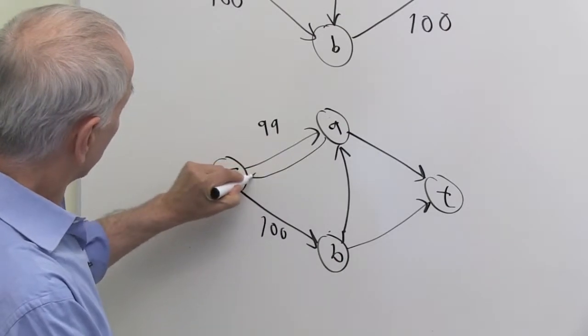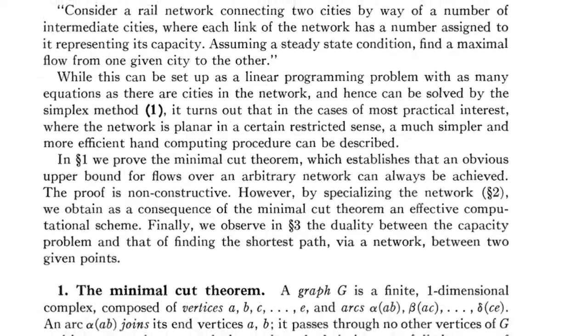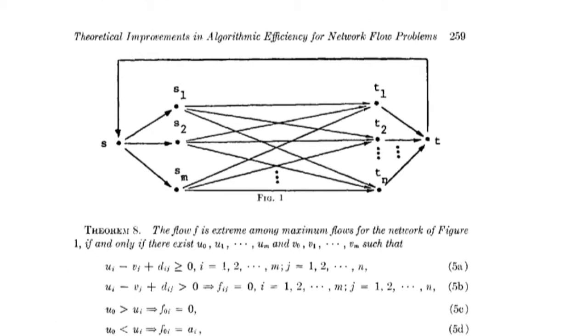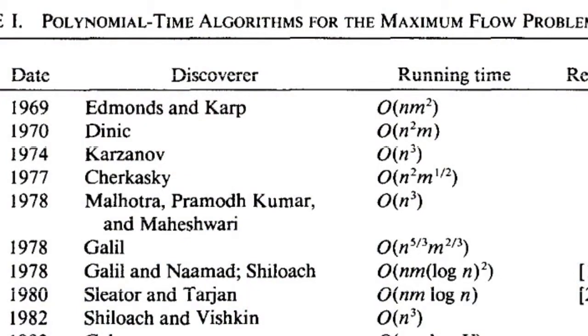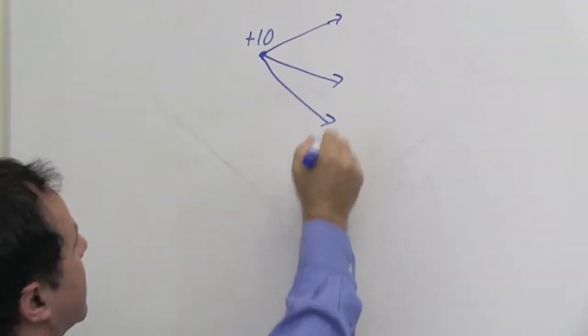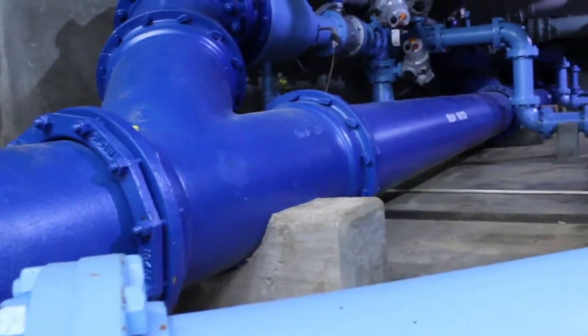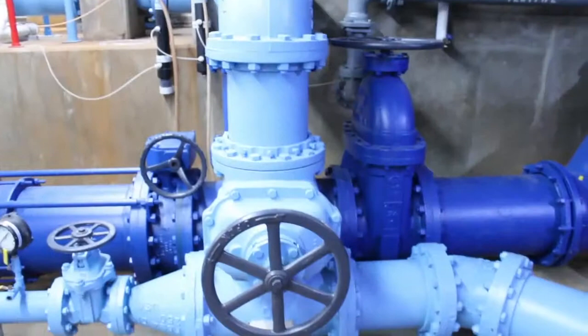One early way to find maximum flows was called the augmenting path method, first described in 1956. And there the matter sat for years, until papers published in the early 70s showed that you could save time by augmenting along the shortest paths first — that is, the paths with the fewest edges — giving a guaranteed polynomial time bound. Then in 1986, Drs. Goldberg and Tarjan published an alternative method that uses local operations. You allow flow excesses — that is, you allow some vertices to have more incoming flow than outgoing flow at intermediate stages of the algorithm. And the field continues to expand, with developments that could lead to new insights and new applications.